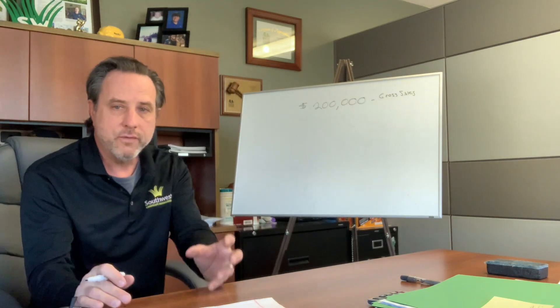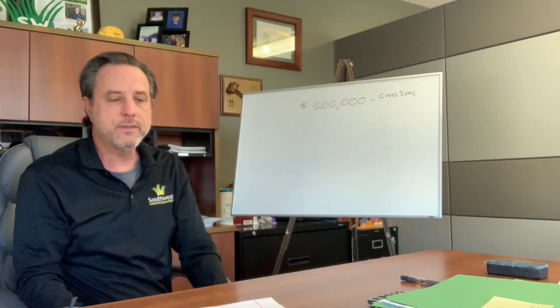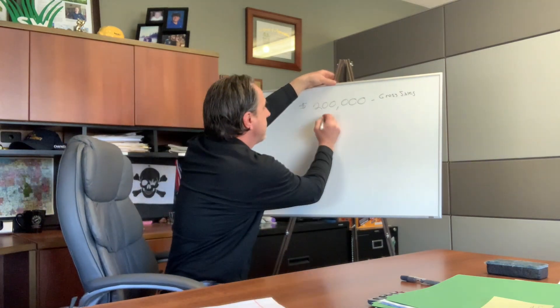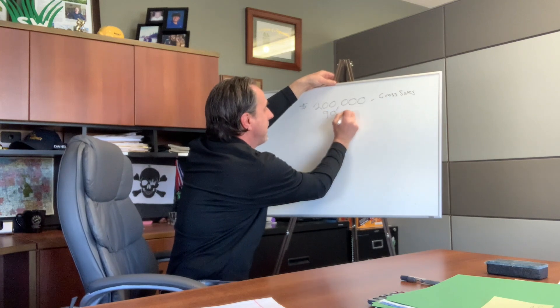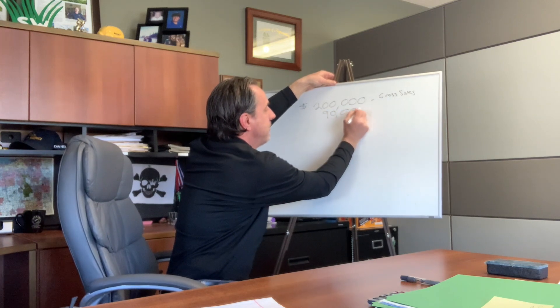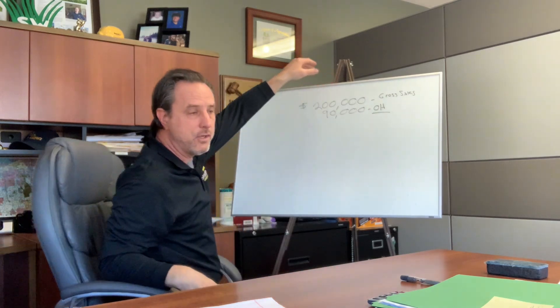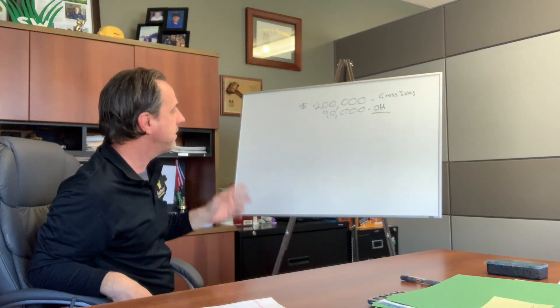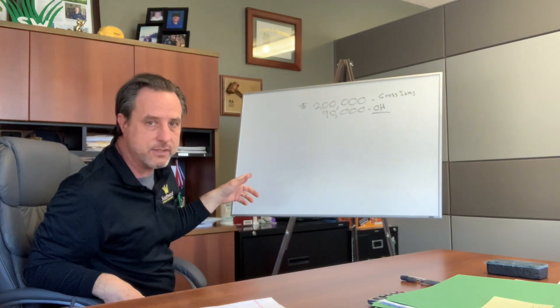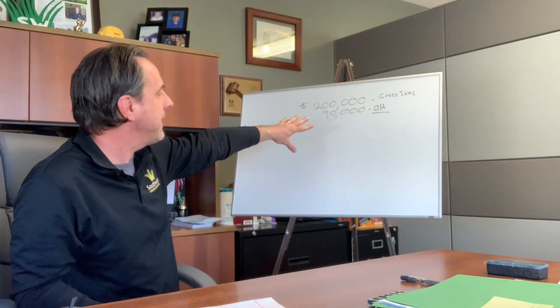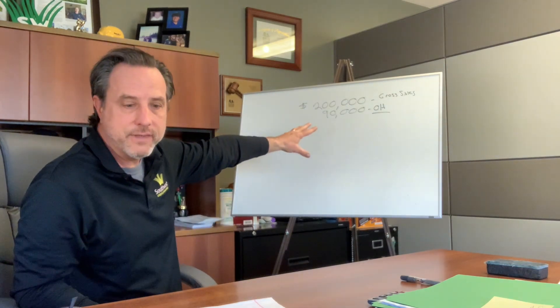At roughly 45% overhead for this $200,000 company, our overhead is $90,000. So all your expenses come to $90,000 a year.